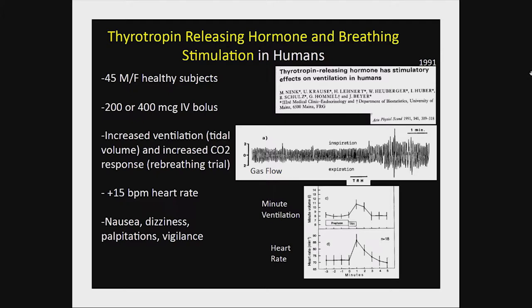TRH is also a breathing stimulant in humans. A 1991 paper by Nick and colleagues studied 45 male and female healthy volunteers given bolus doses of 200 or 400 micrograms intravenously. The drug increased ventilation primarily by an increase in tidal volume, and also increased responsivity to CO2. There was a slight increase in heart rate; side effects included nausea in about 50%, dizziness, palpitations, and increased sense of vigilance. A transient ~40% increase in minute ventilation was observed.